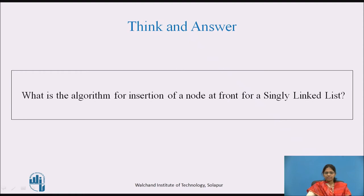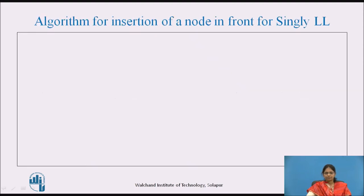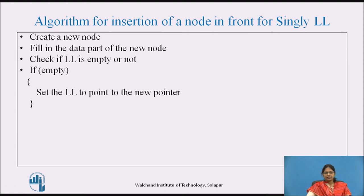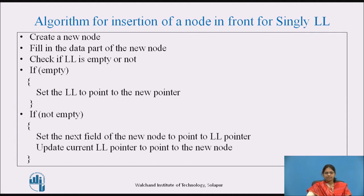Algorithm for insertion of a node at the front of a singly linked list: First, create a new node. Fill in the data part of the new node. Check if the linked list is empty or not. If empty, set the linked list pointer to point to the new node. If not empty, set the next field of the new node to point to the LL pointer, and then update the current LL pointer to point to the new node.